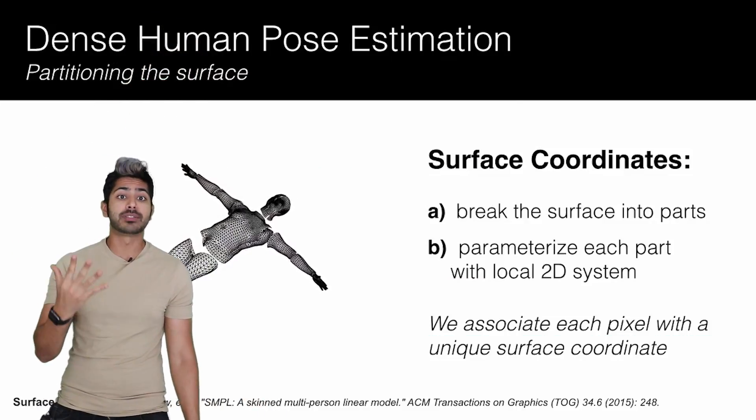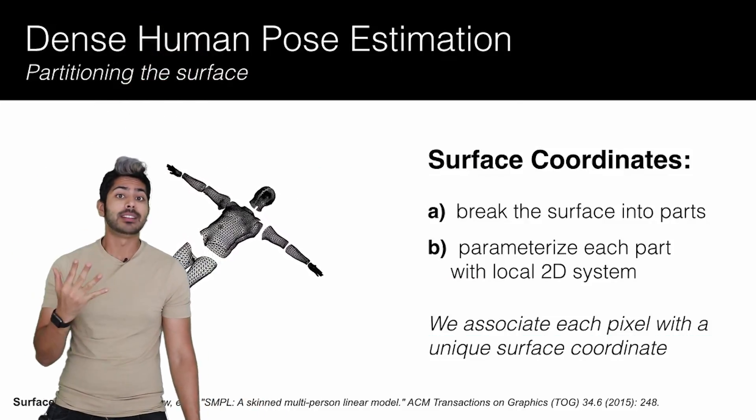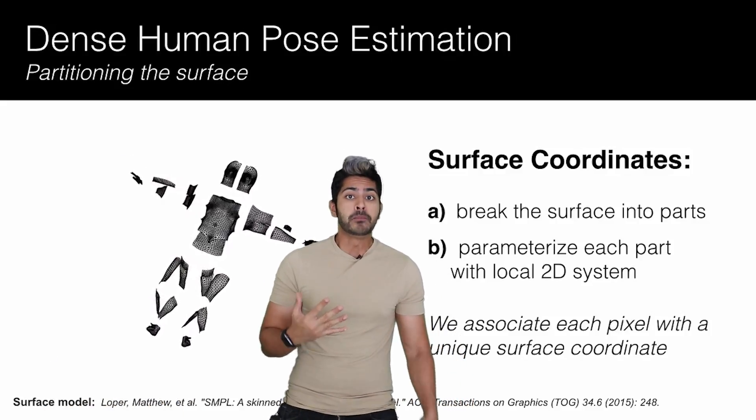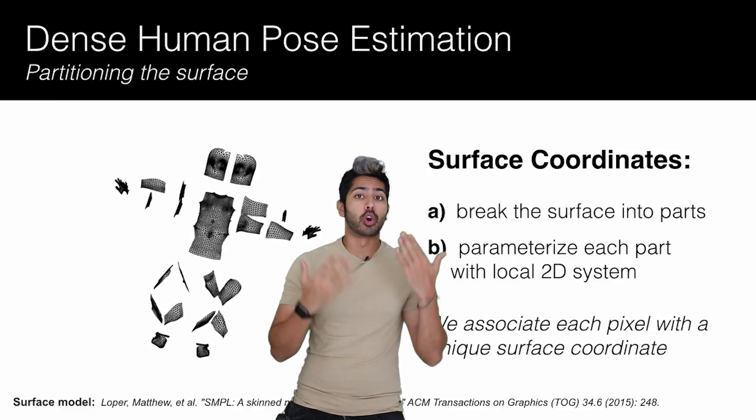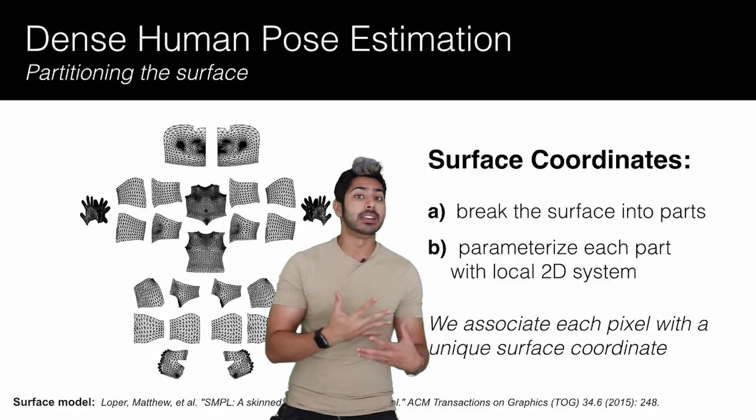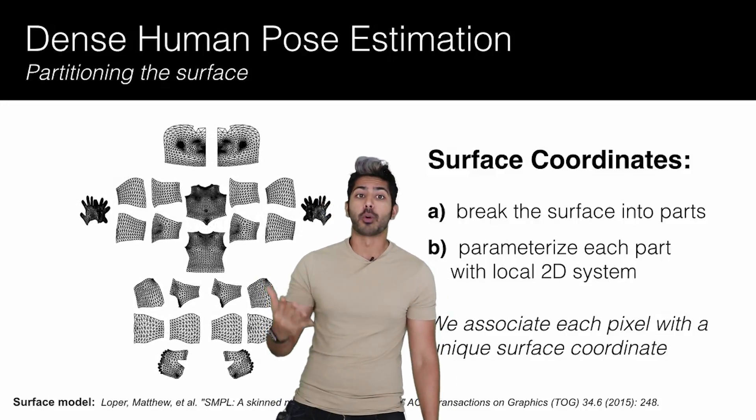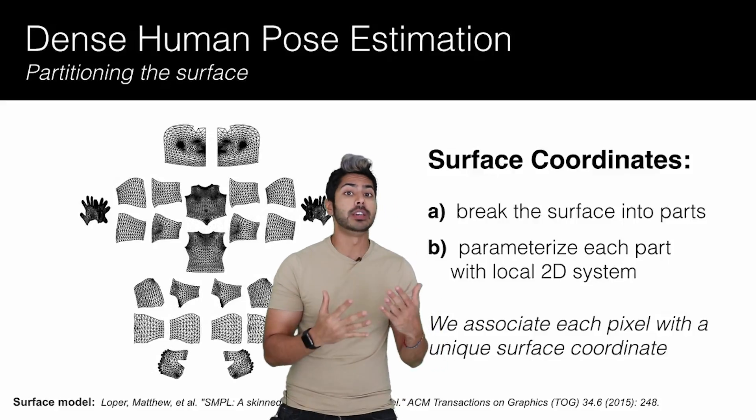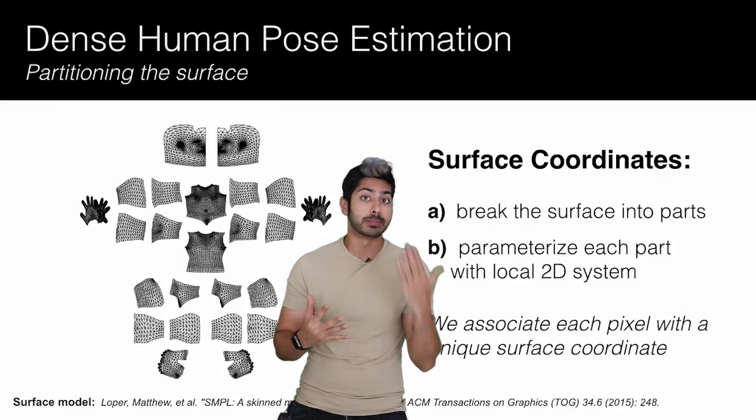They basically asked the annotators to annotate regions corresponding to defined body parts like the head and the legs. All of these annotations were labeled with their corresponding 3D body part, which acted as the label. They did this for 50,000 humans, which summed up to be a total of 5 million manually annotated correspondences.